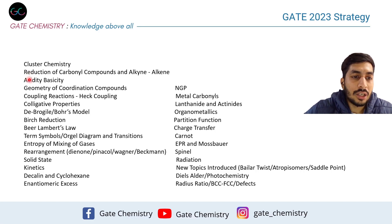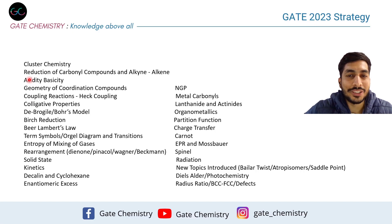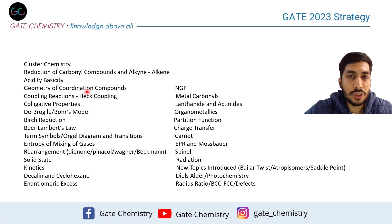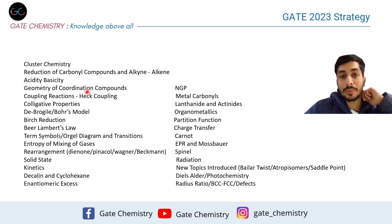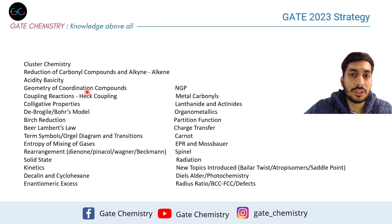Know how to reduce carboxylic acids and what chemoselective reagents reduce ketones or esters. If reducing an alkyne, know which reagents give cis-alkene and which give trans-alkene selectively. Acidity and basicity is also something you might expect, as questions have not appeared on it in recent years. Geometry of coordination compounds is important too — for example, Jahn-Teller distortion and how it changes the geometry of a coordination compound.